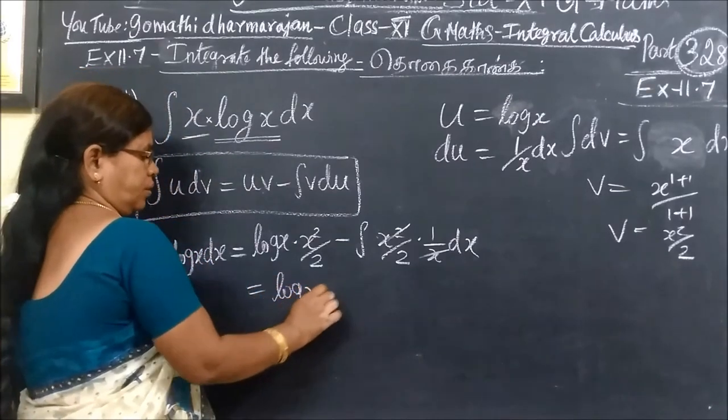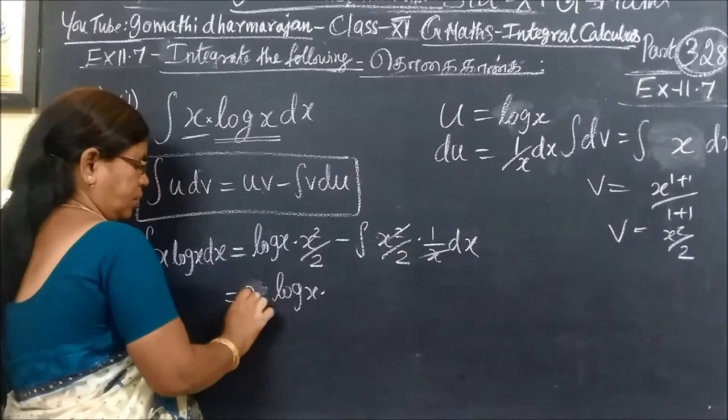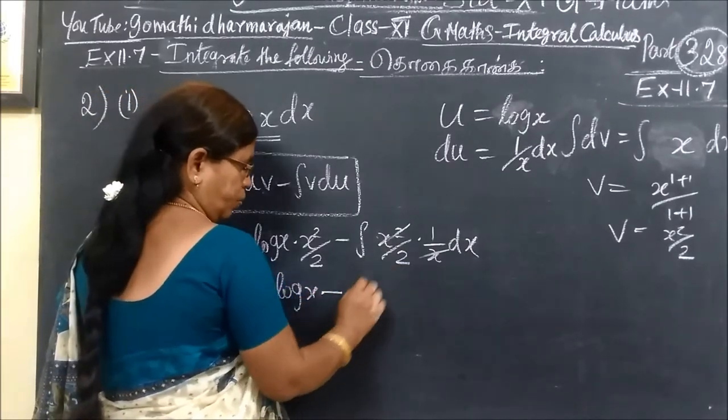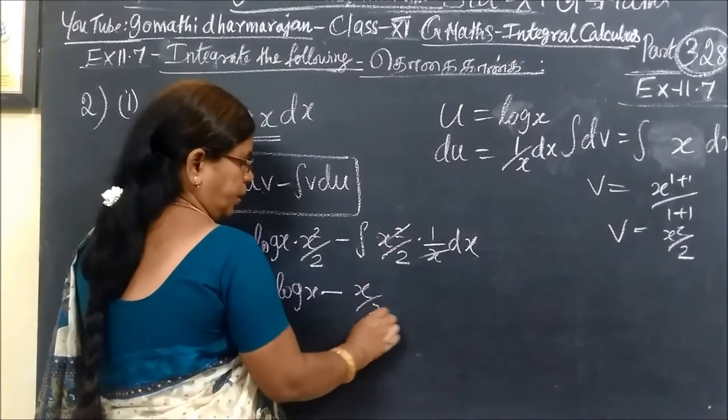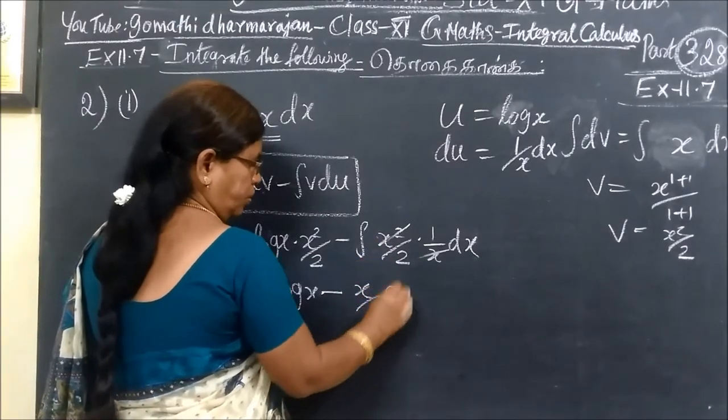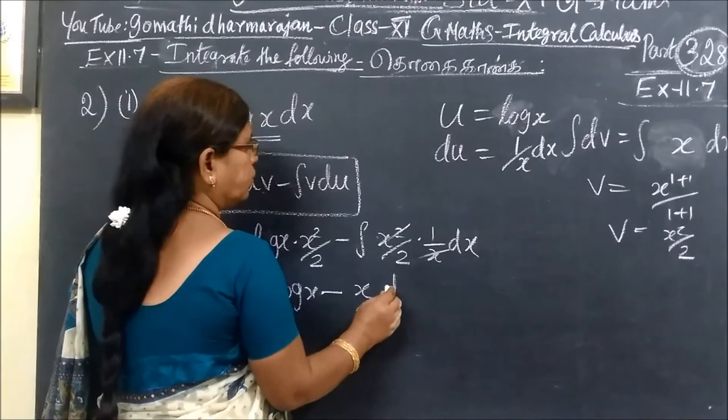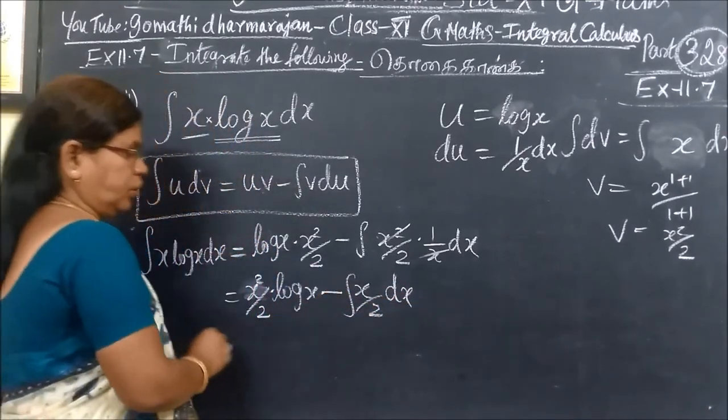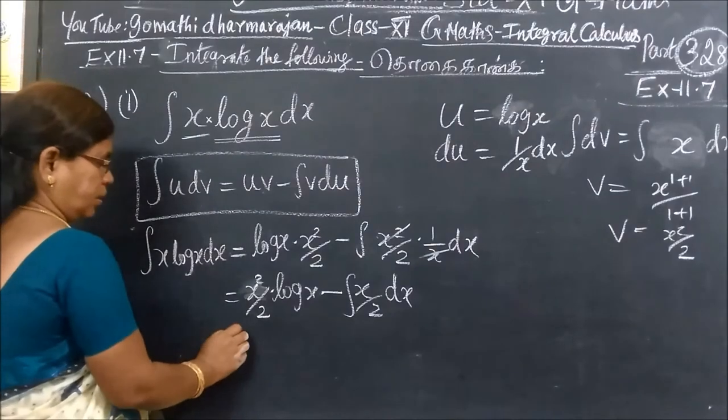So this becomes log x times x squared by 2, minus the integral of x squared by 2 times 1 over x dx.